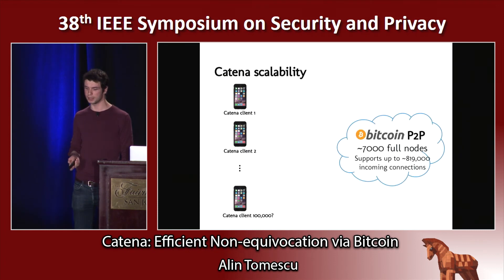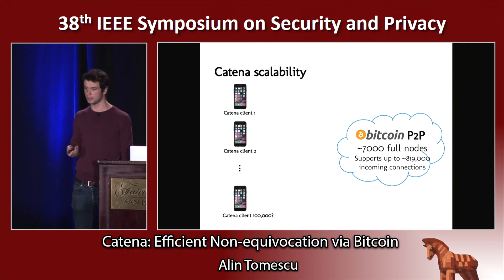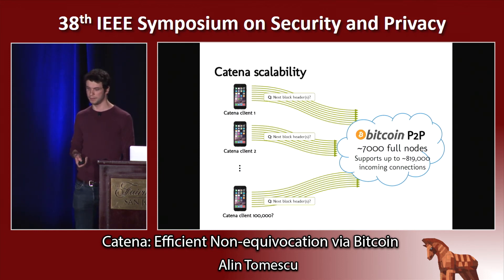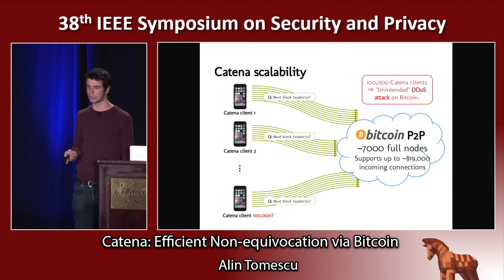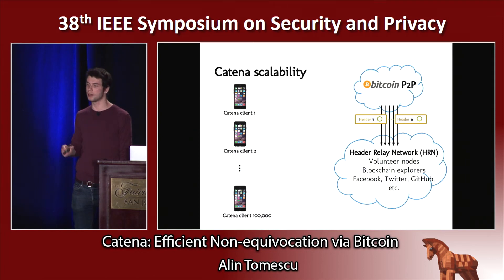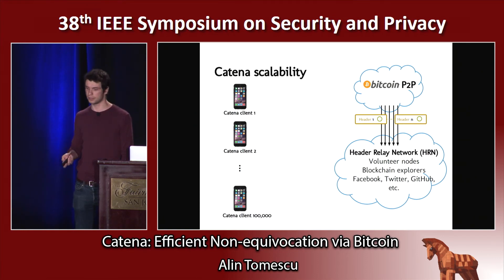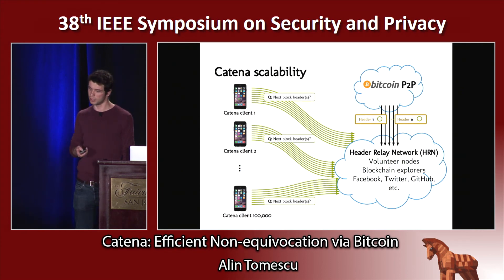Let's talk about scalability. This is a problem because the Bitcoin peer-to-peer network only has 7,000 full nodes, each with around 117 connections, amounting to around 819,000 incoming connections the network supports. If we had a bunch of Katina clients for a popular app like WhatsApp, and each client opens around 8 connections to this network, we would unintentionally DDoS Bitcoin. To fix this, we introduced the header relay network — a way to scale up the Bitcoin peer-to-peer network's capacity for incoming connections. This network downloads block headers from Bitcoin and allows Katina clients to fetch those headers. We can implement it with volunteer nodes, existing blockchain explorers like blockchain.info, Facebook feeds, Twitter feeds, GitHub feeds, and so on.